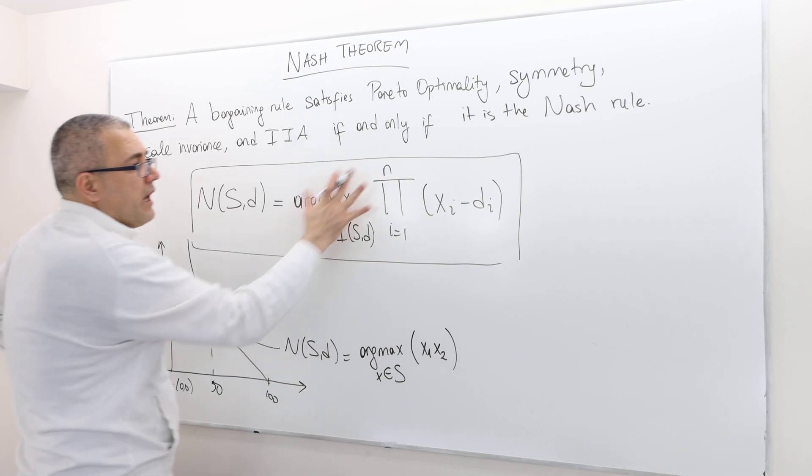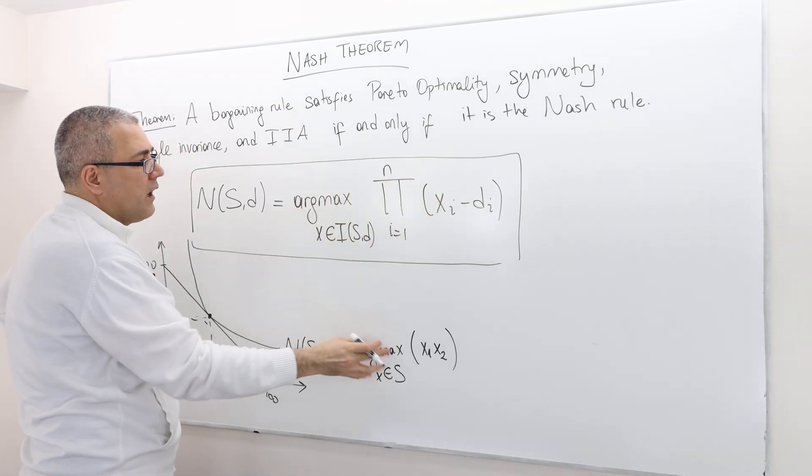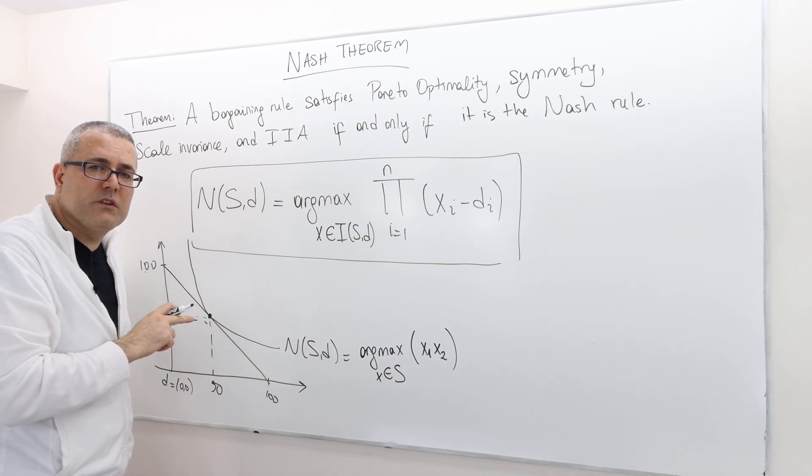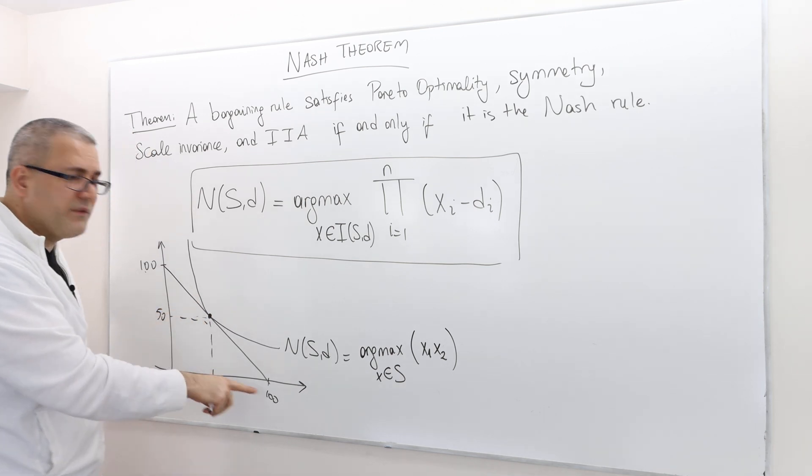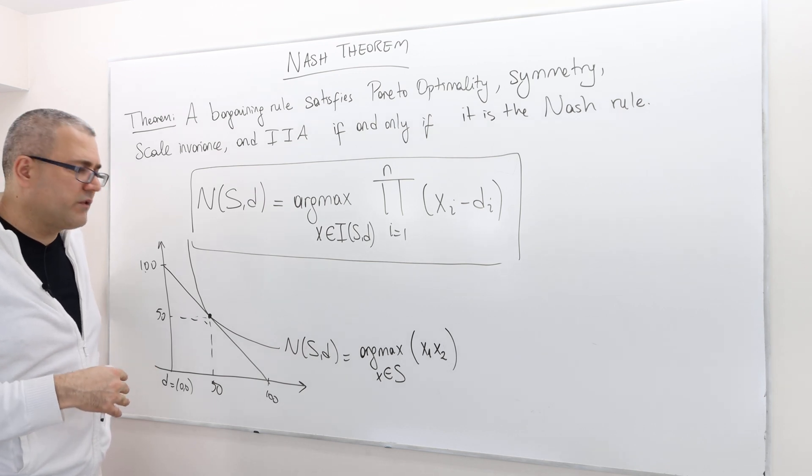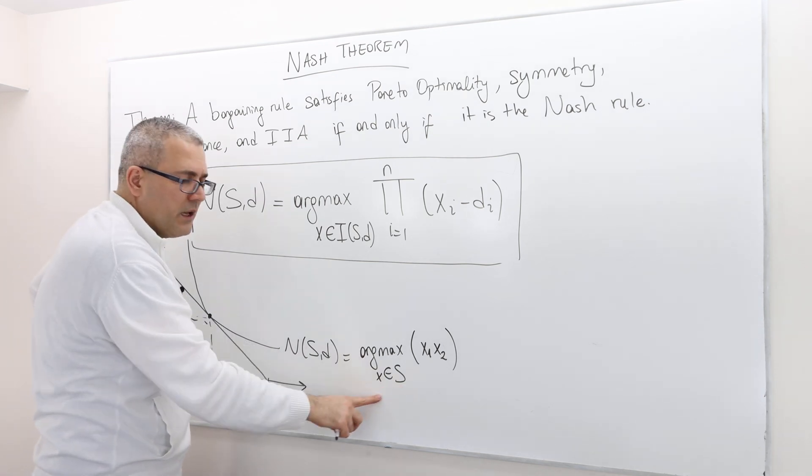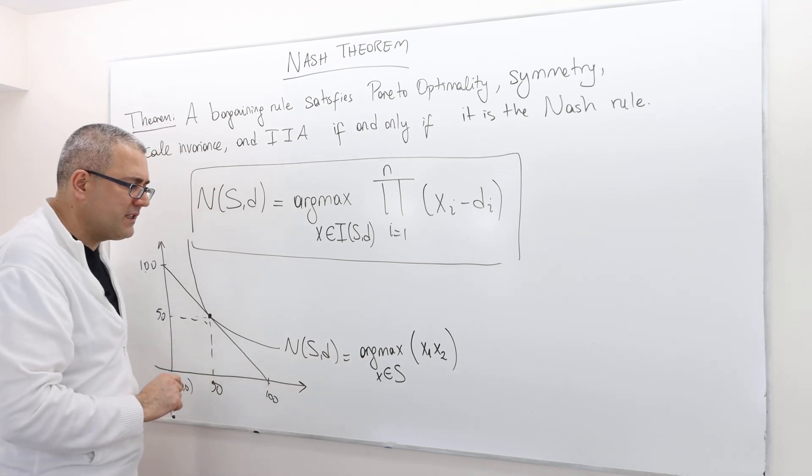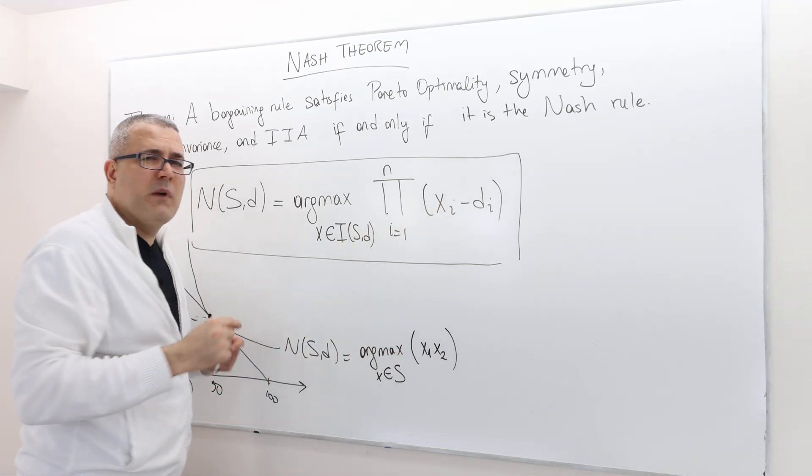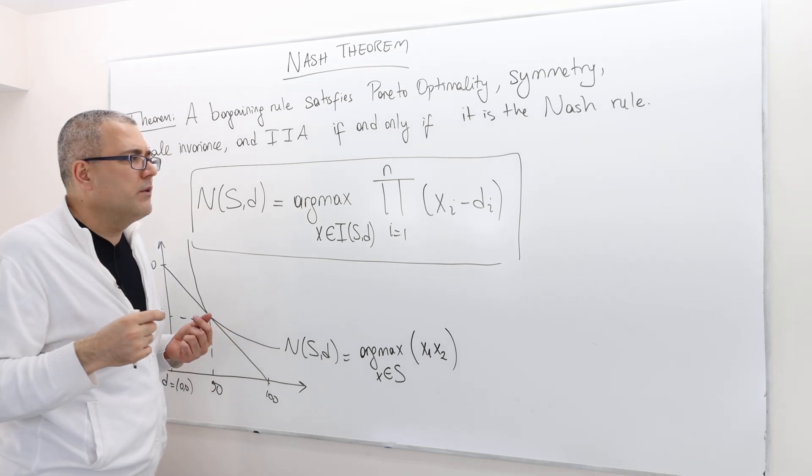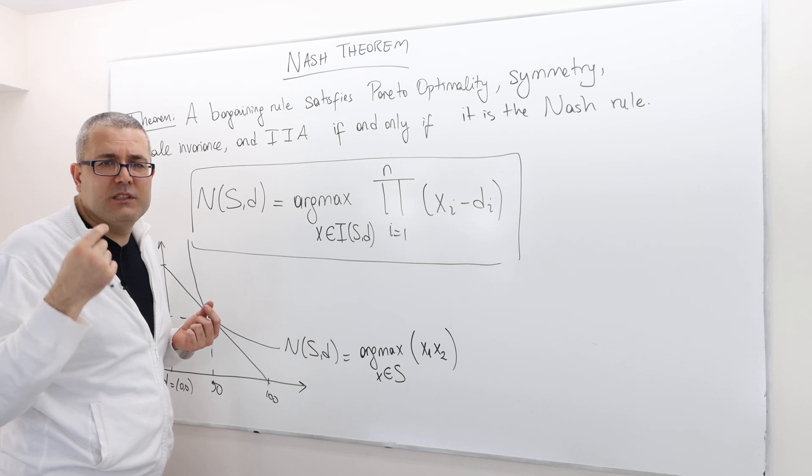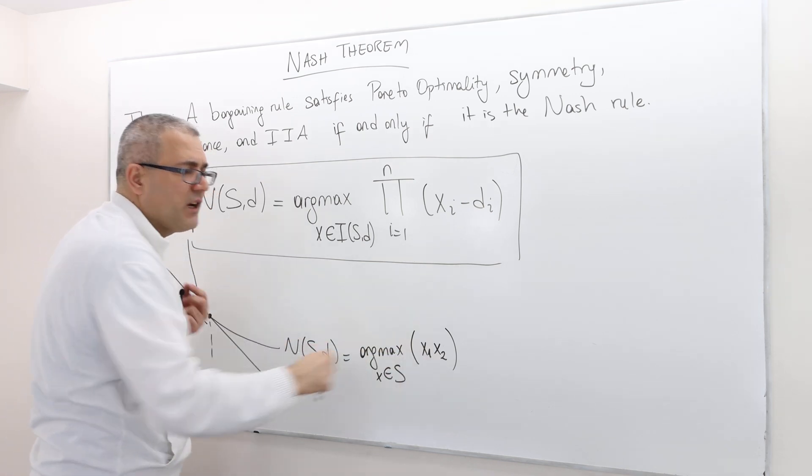Well, because if you calculate this, this is argmax, where X is coming from the set of individually rational payoffs, but we know the set of feasible payoffs is equivalent to the set of individually rational payoffs in this bargaining problem. So I just wrote X in S. It maximizes X1 minus D1, which is 0. So it's just X1 times X2 minus D2, which is 0. So it's basically X1 times X2.